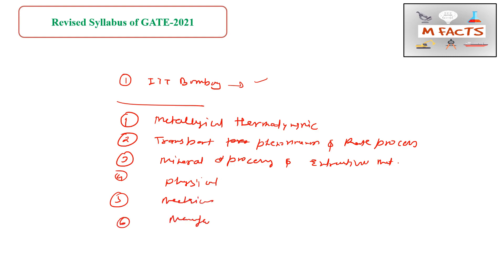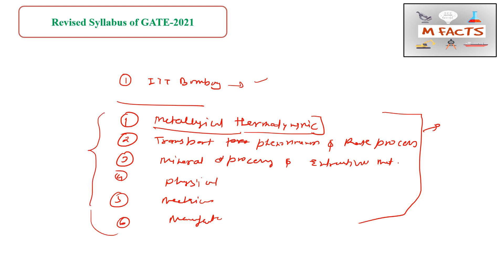The remaining subjects such as Physical Metallurgy, Mechanical Metallurgy, and Manufacturing Processes remain in the syllabus. There have been changes inside the topics within these subjects as well. I will try to make a separate video discussing the revised GATE 2021 syllabus for Metallurgical Engineering in detail — including how and from where to prepare each subject.